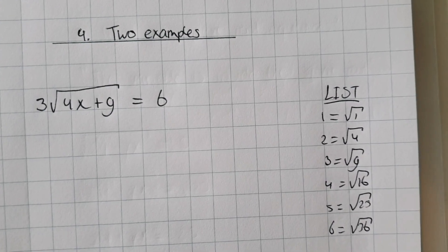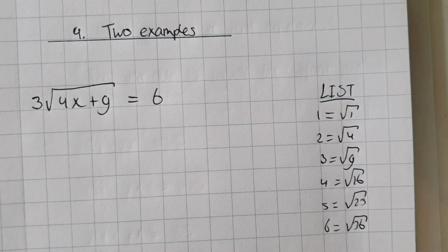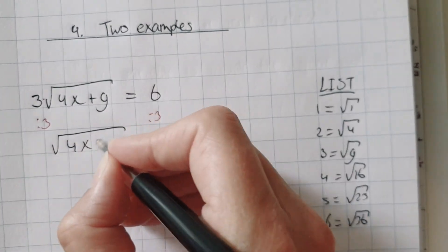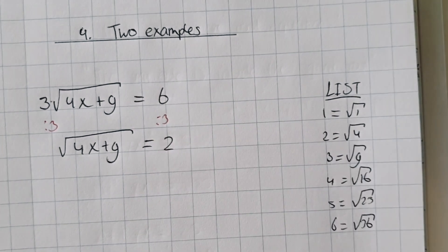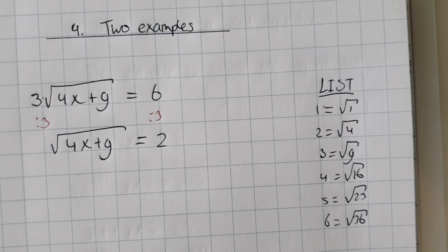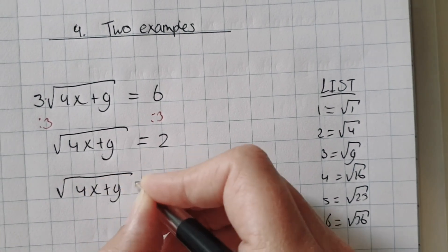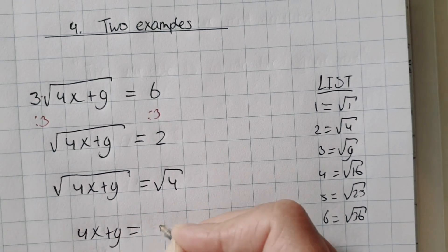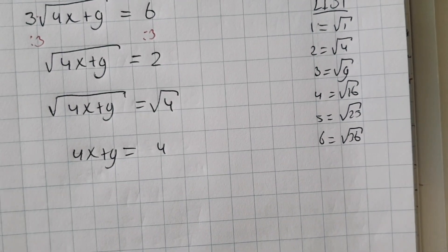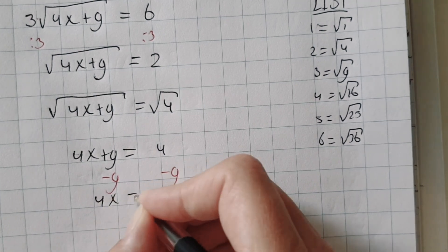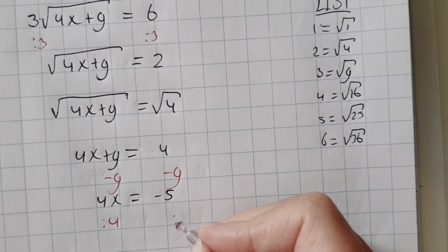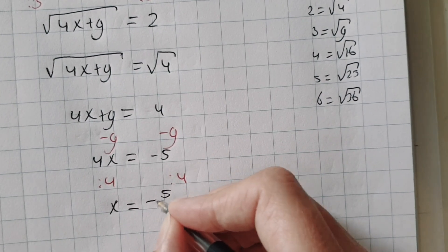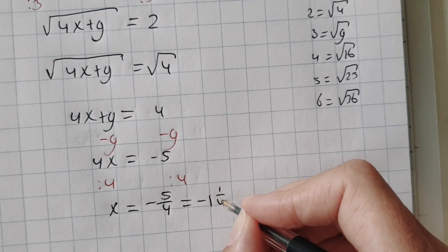Here are two examples. 3 times square root of 4x plus 9 equals 6. First, I have to take away the 3 by doing the opposite of times — so divide by 3 on both sides. Square root of 4x plus 9 is left over, and 6 divided by 3 is 2. I look at the list — I can find 2, which I rewrite as square root of 4. Now I have two square roots, so I can take away the square roots. The leftover equation is 4x plus 9 equals 4. Minus 9 on both sides, then divide by 4 on both sides. Minus 5 divided by 4 — I make a fraction of it — is minus 1 and 1 fourth.